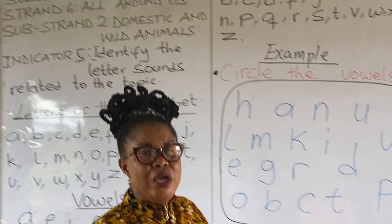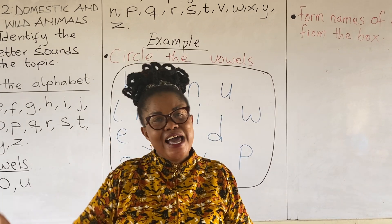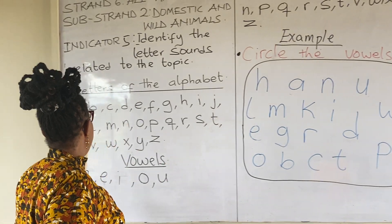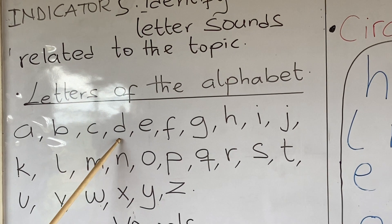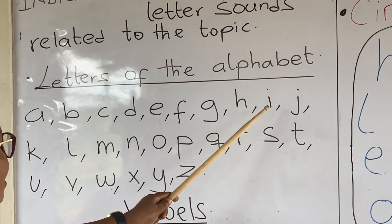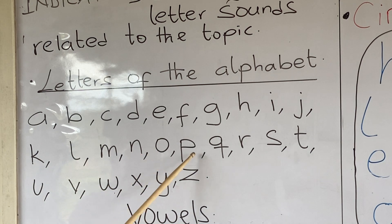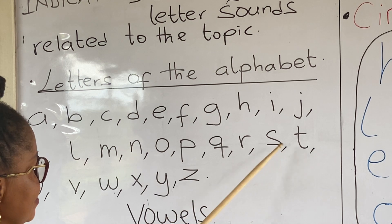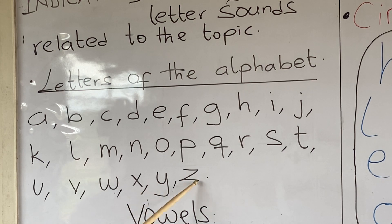Before we continue, let's revise the letters of the alphabet. They are A, B, C, D, E, F, G, H, I, J, K, L, M, N, O, P, Q, R, S, T, U, V, W, X, Y, Z. Alphabet.